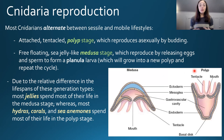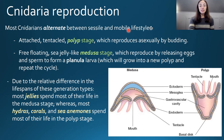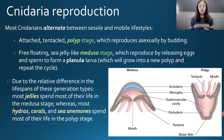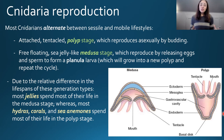In terms of cnidarian reproduction, most cnidaria alternate between sessile and mobile lifestyles. These two stages in their life cycle are called the polyp stage and the medusa stage respectively. The polyp stage is the sessile, non-mobile lifestyle where they are attached to a surface and reproduce asexually by budding. In the medusa stage they are free-floating, mobile, sea jelly-like animals that reproduce by releasing eggs and sperm to form a planula larva, which can grow into a new polyp and repeat the cycle.